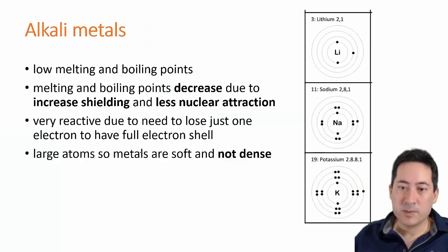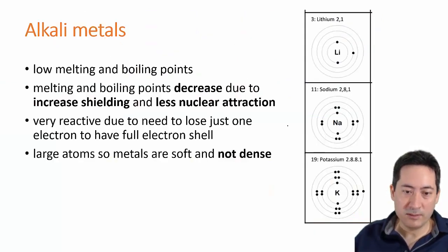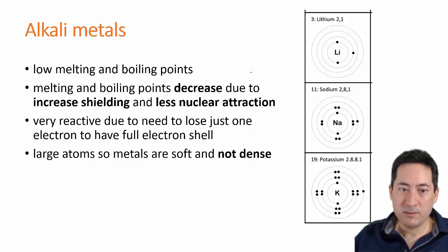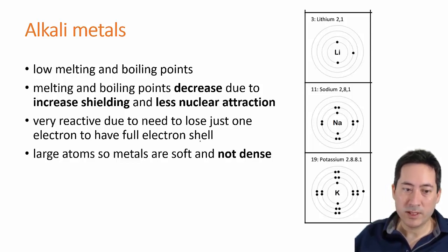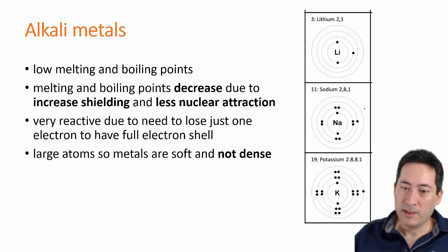Just looking at some specific examples now. So why is the reactivity of Group 1 metals greater as you go down? Why are they softer?